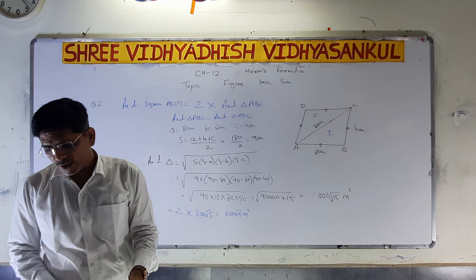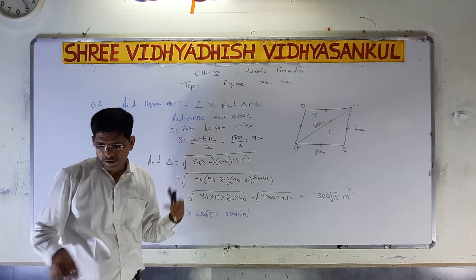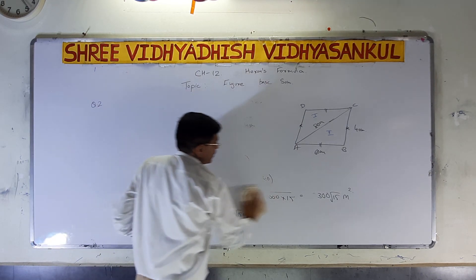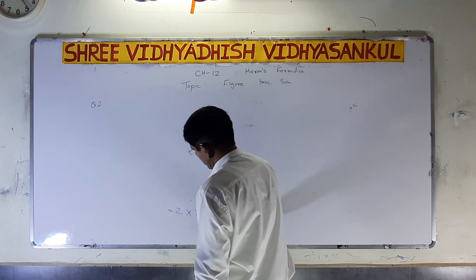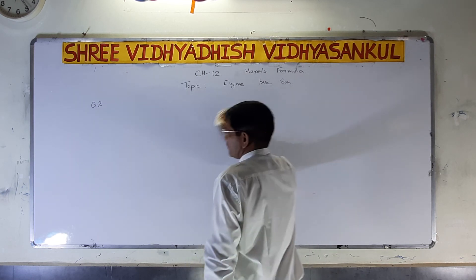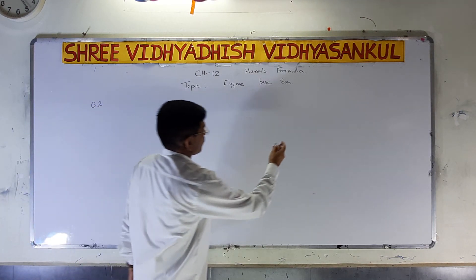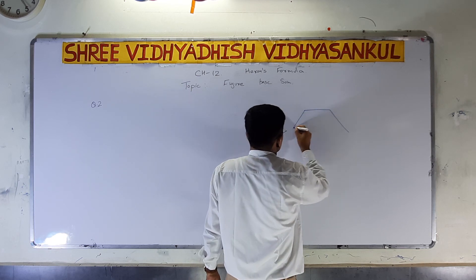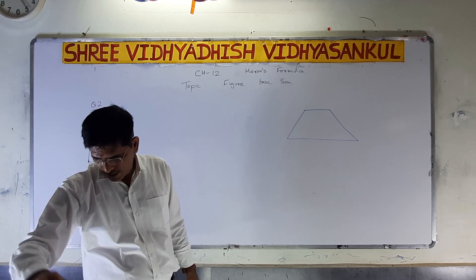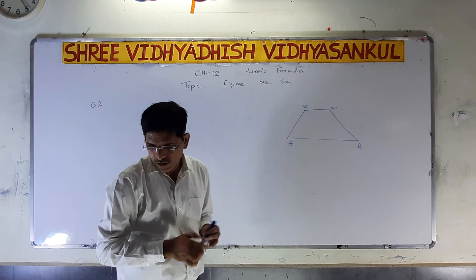Now we want to discuss the trapezium. In trapezium, one important characteristic that differs from parallelogram is that only one pair of sides is parallel. In a parallelogram, two pairs are equal and parallel, while in a trapezium, only one pair is parallel. The trapezium field is ABCD.